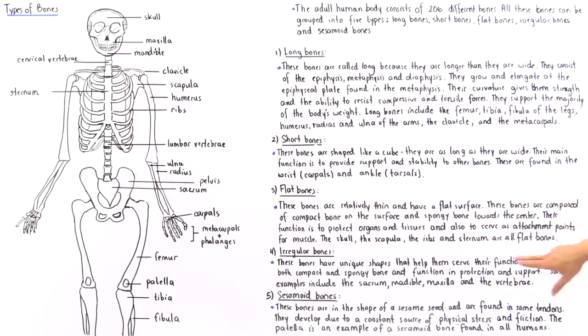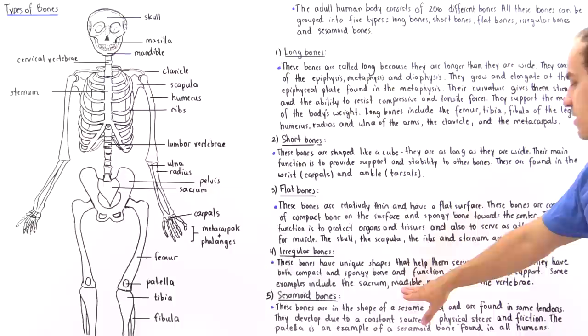Irregular bones have unique shapes that do not fit the other categories, and these shapes help them serve their specific purpose. They contain compact and spongy bone and function in protection and support. Examples include the sacrum, mandible, maxilla, and vertebrae.